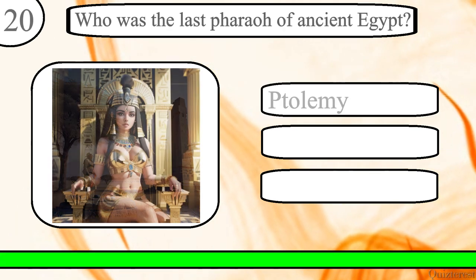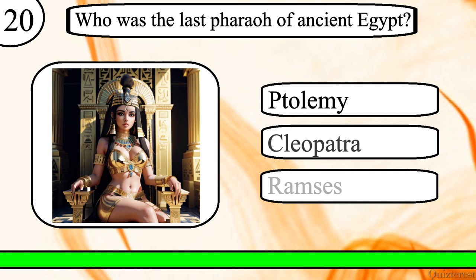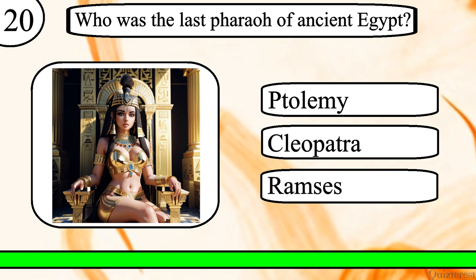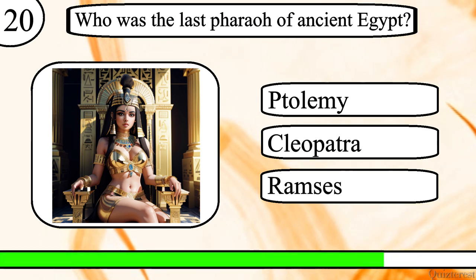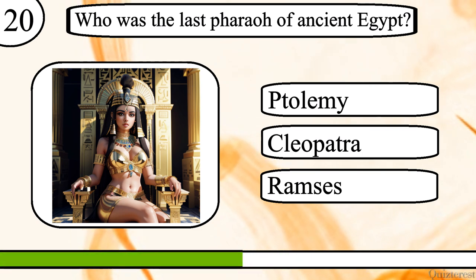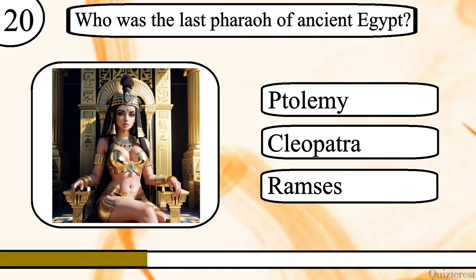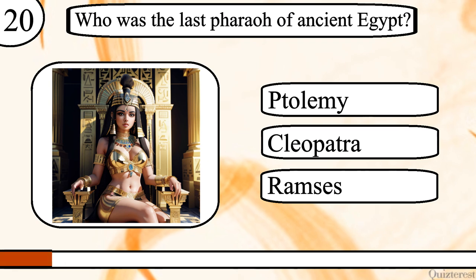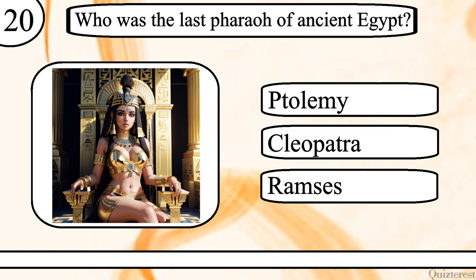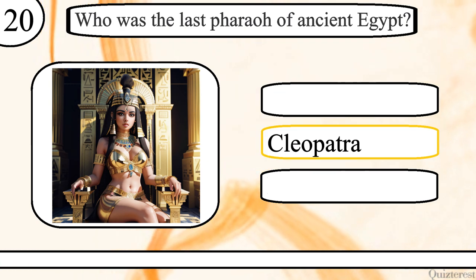Question 20. Who was the last pharaoh of ancient Egypt? Ptolemy, Cleopatra or Ramses? The correct answer is Cleopatra.